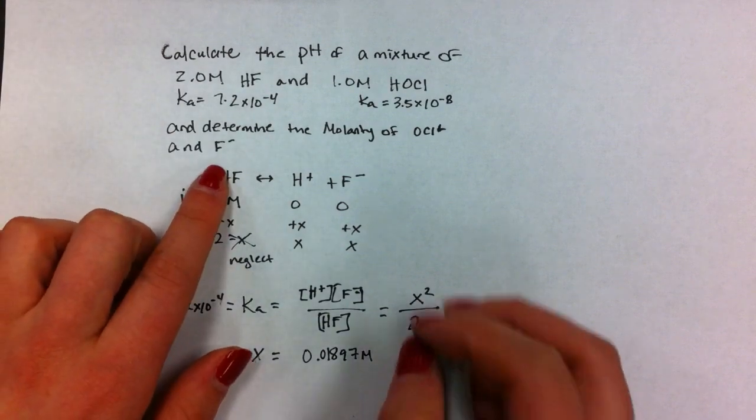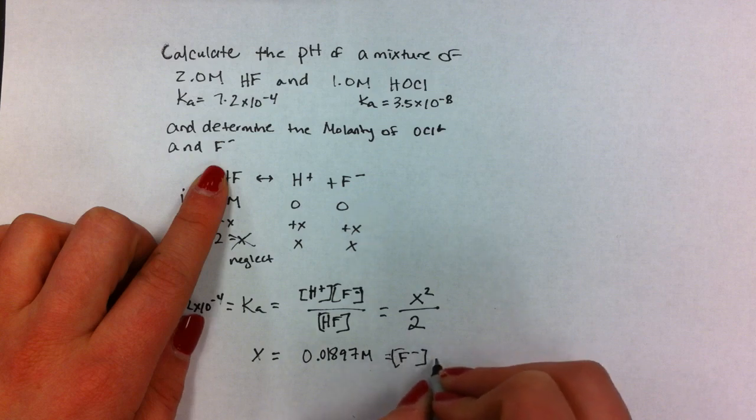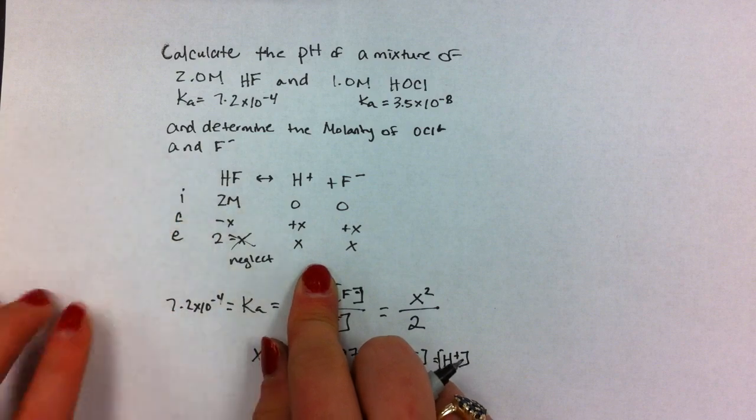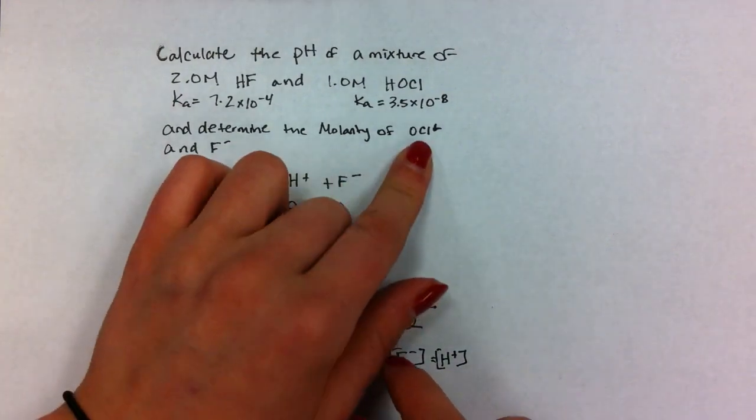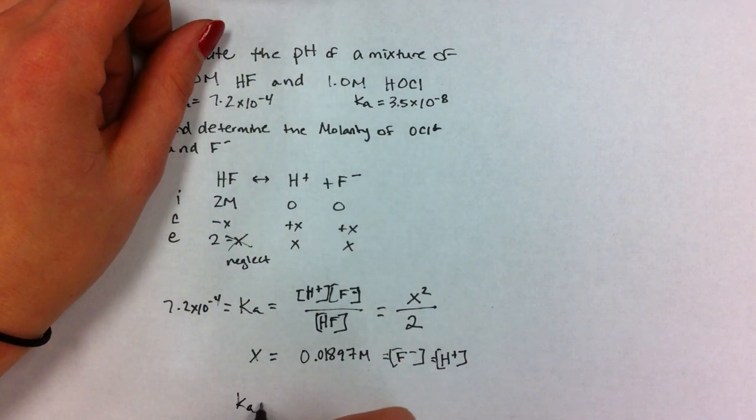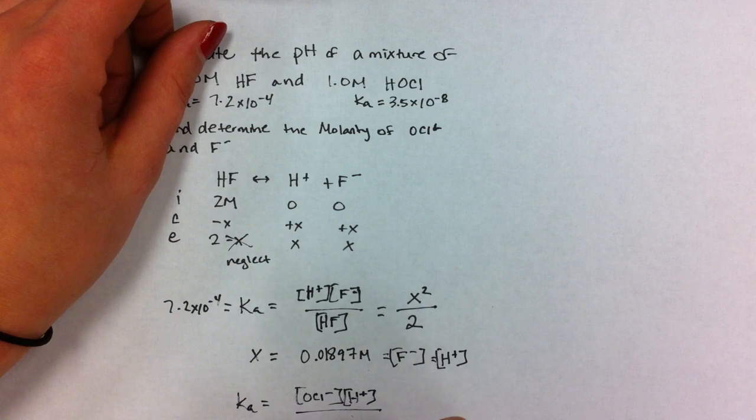That is also the concentration of F- at equilibrium. Now we need to find the concentration of OCl-. We know Ka equals OCl- times H+ over HOCl.